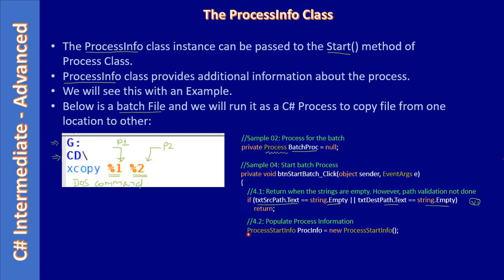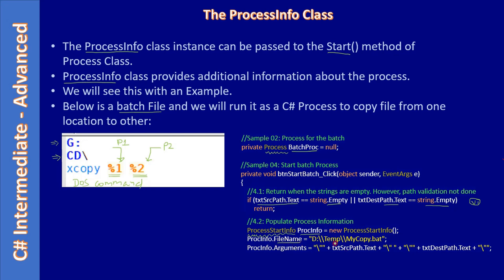Now we are using the ProcessStartInfo class and creating an instance named proc info. For proc info, the FileName is set to D:\temp\mycopy.bat — that is the batch file location. Here we are stating what is the location of the executable. We can execute exe files as well as batch files. The same technique you can use to specify an exe location as well. Then we make use of the Arguments member of proc info.